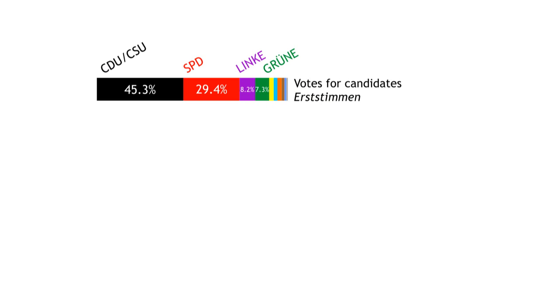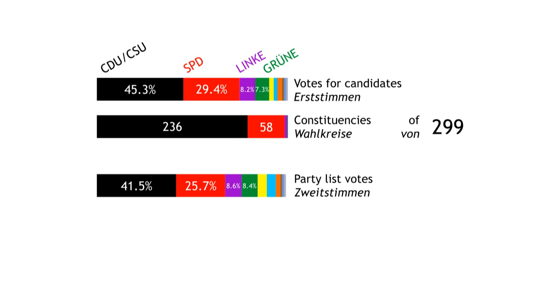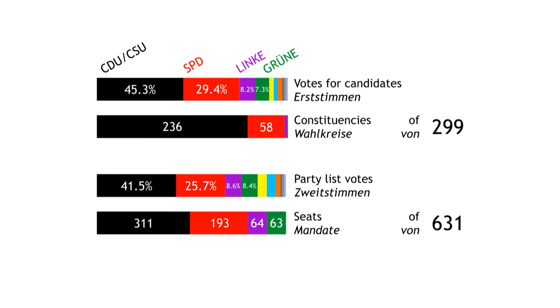But that could lead to inconsistencies. For example, at the last election in 2013, Union candidates got 45% of the vote but won 79% of the constituencies, which would give them a massive majority. So next, the party list votes are counted, and extra members are added to the directly elected members until the proportions are right.